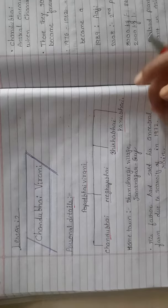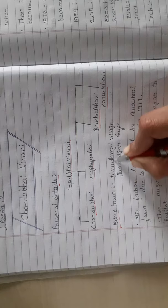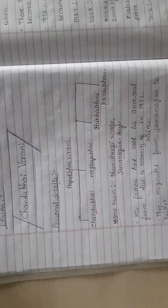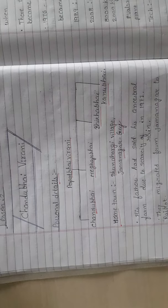His hometown is a village in Jamnagar, Gujarat. His father's name is Popat Bhai and he has four sons.